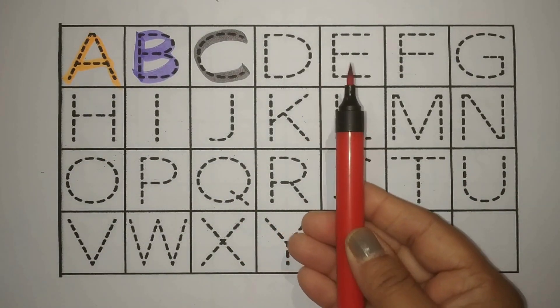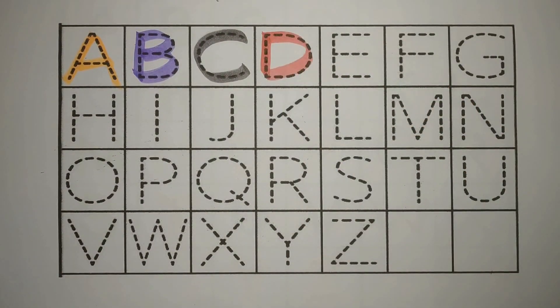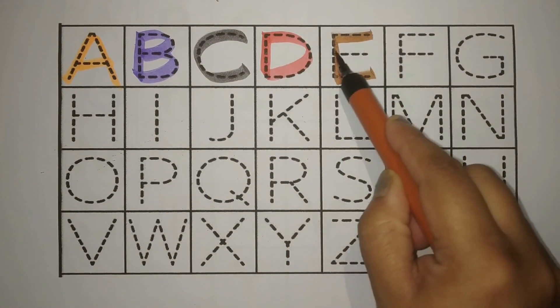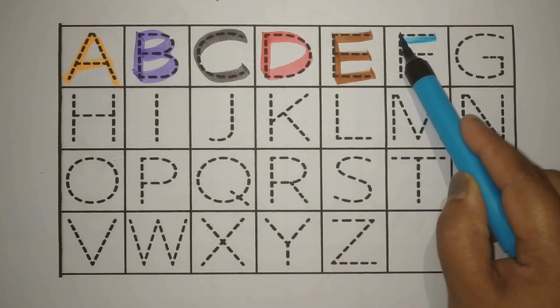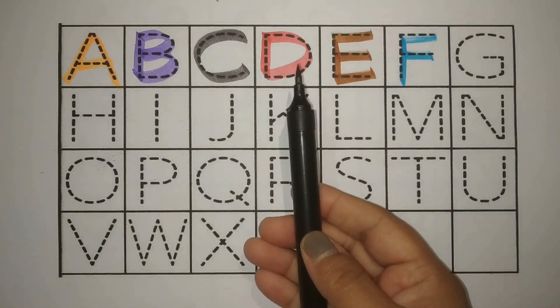Red. D, D for Door. Daroza. Brown. E, E for Egg. Unda. Blue. F, F for Flag. Janda. Black.